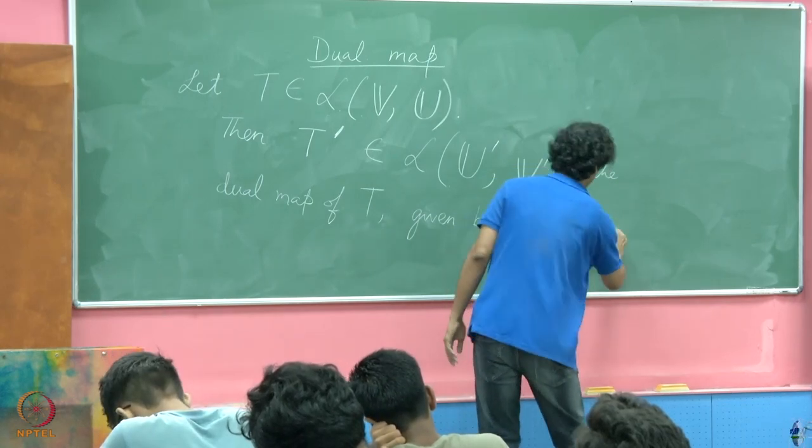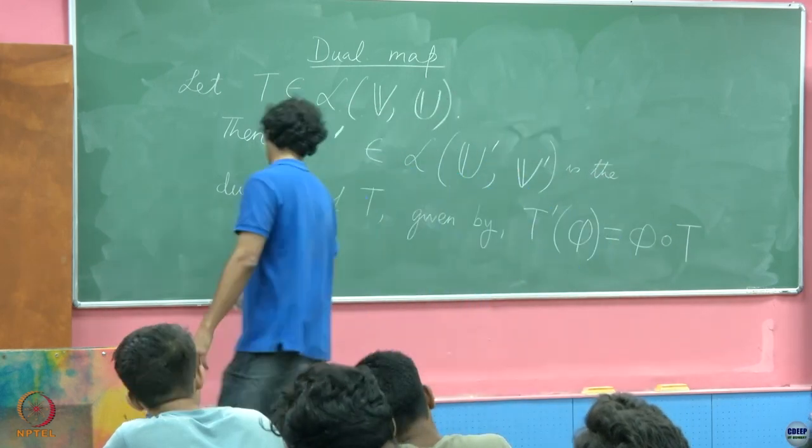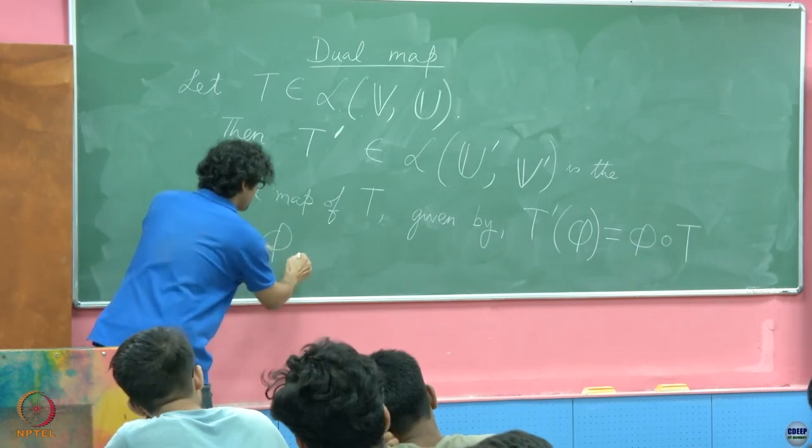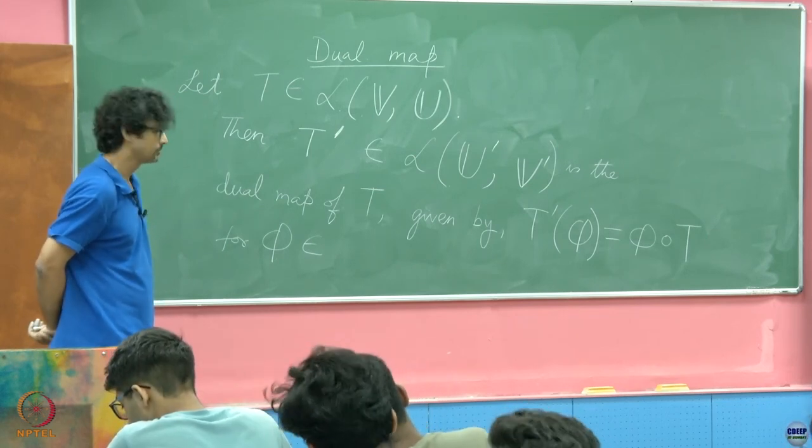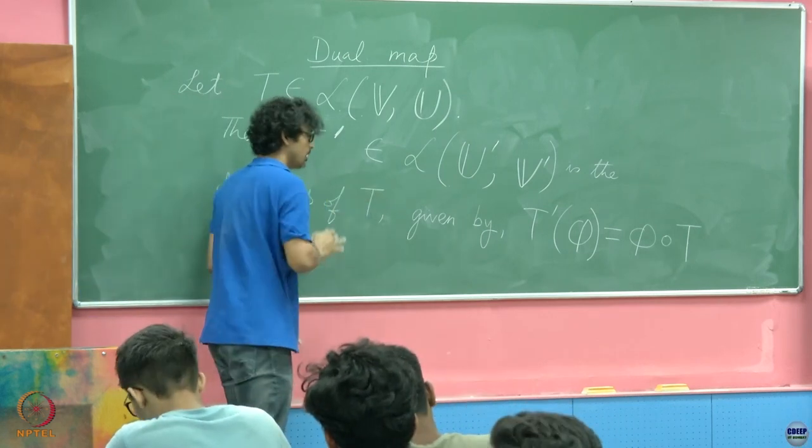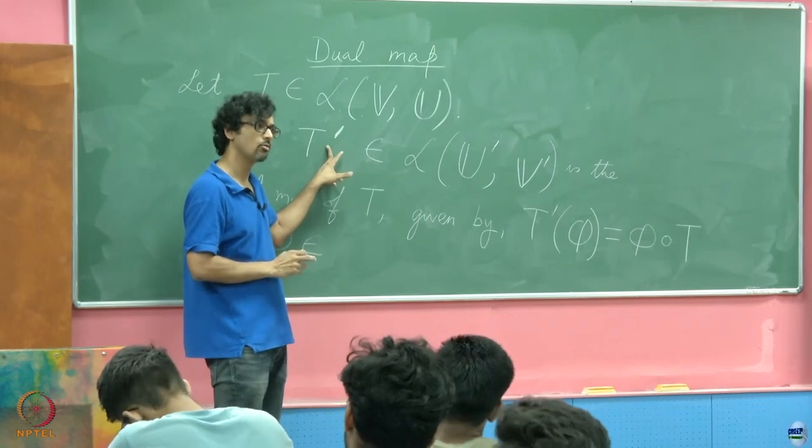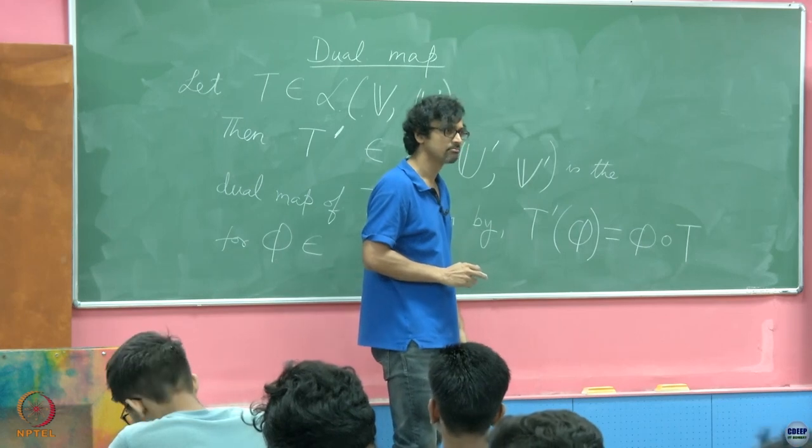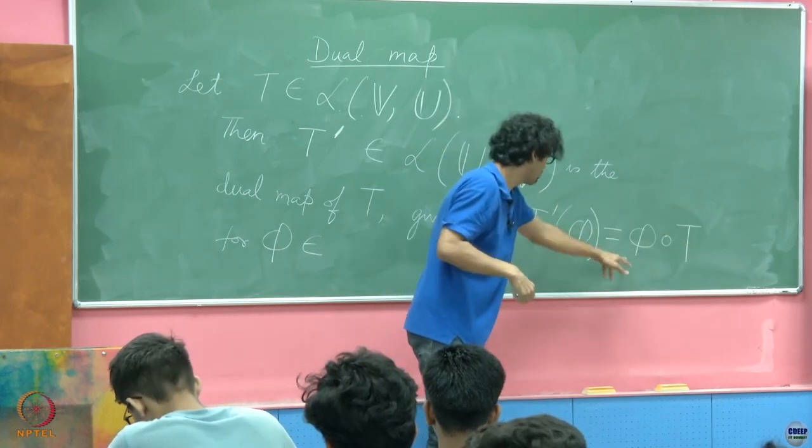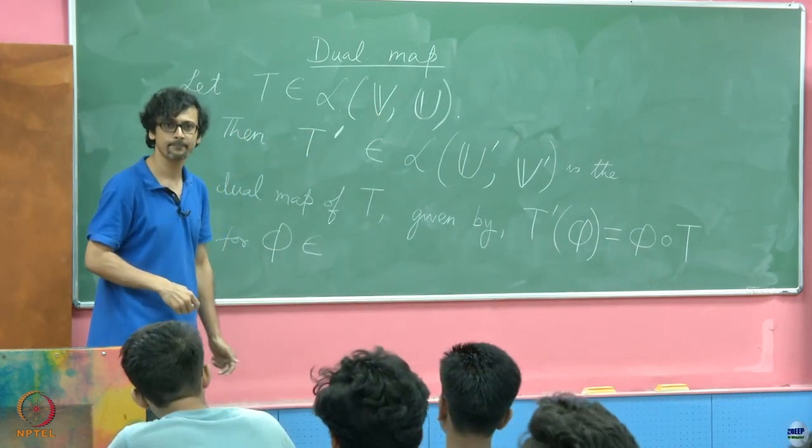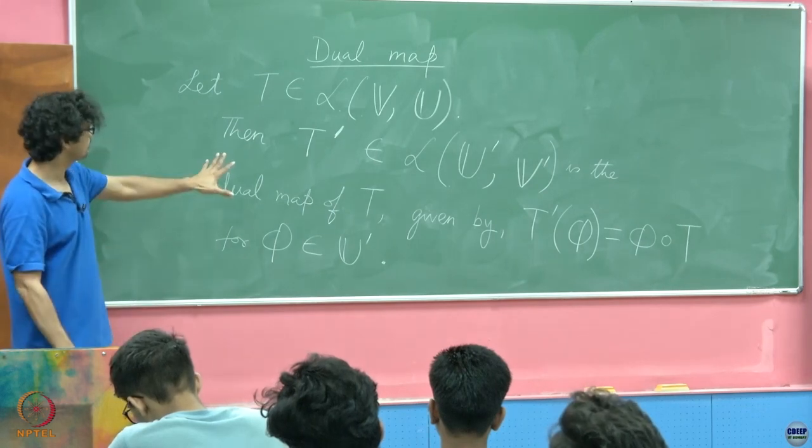So let us first see where it comes from, and that is going to be interesting to see. So where does φ come from? Where do you think does φ come from? See, I am defining something new. I cannot use too many new things here; everything else must be well known. This T prime is the map that I am defining now, but I cannot define it in terms of things that I do not understand.